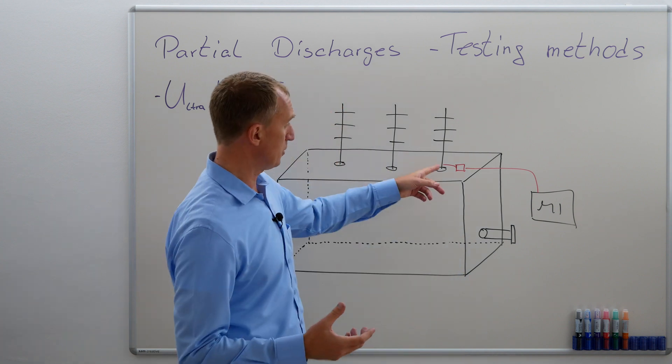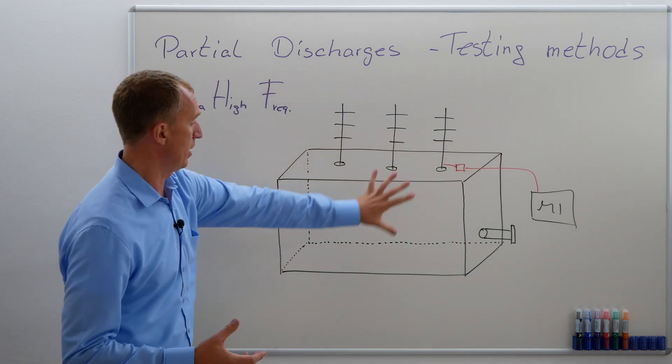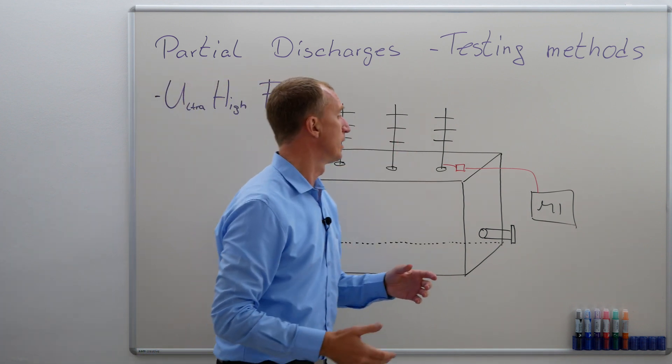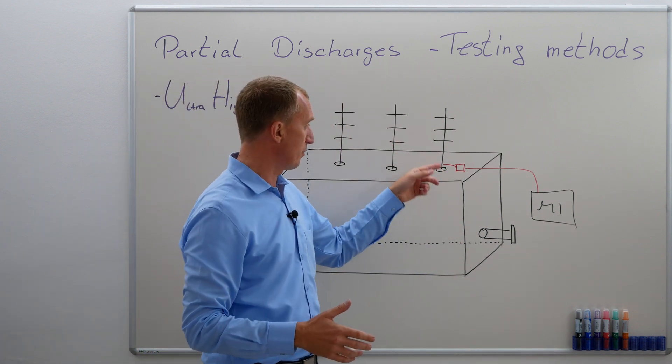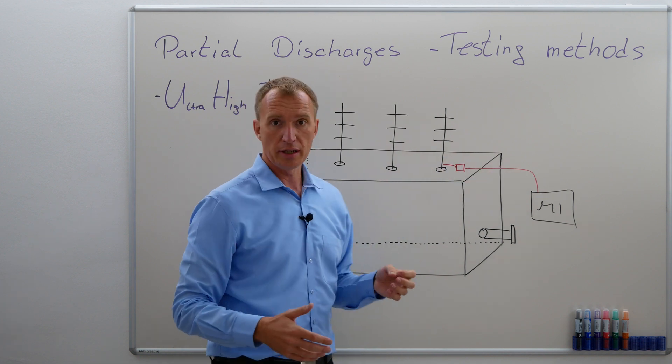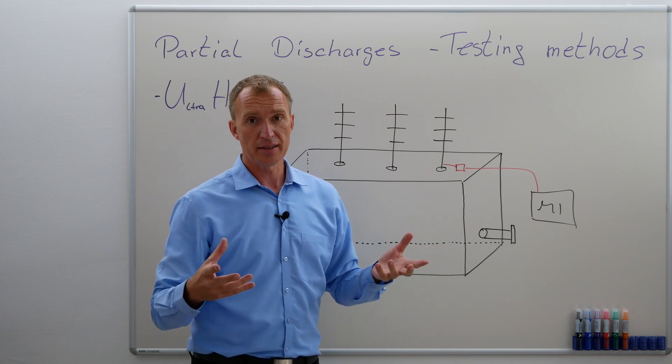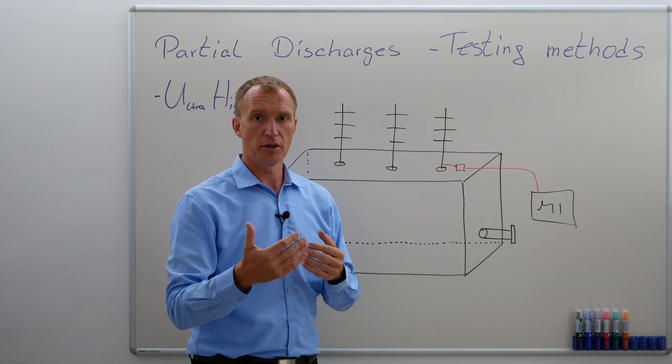When we are measuring electrically with our transformer, let's imagine this is a big transformer with only three bushings. We are measuring, for example, on one of our bushings. We are doing an electrical measurement and taking the electric signal. This being said, we are only getting a certain frequency range of the signal.